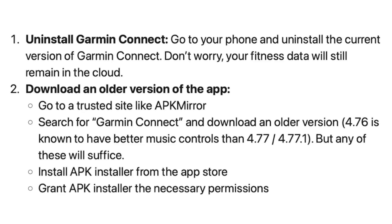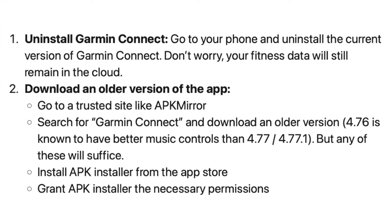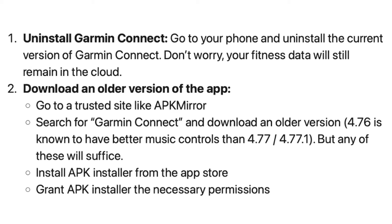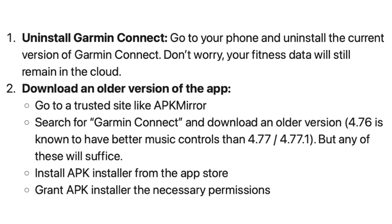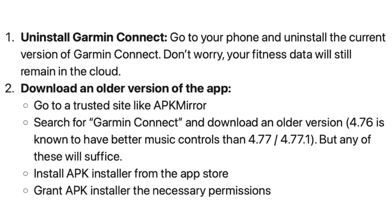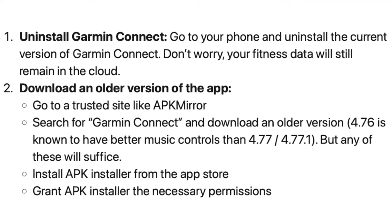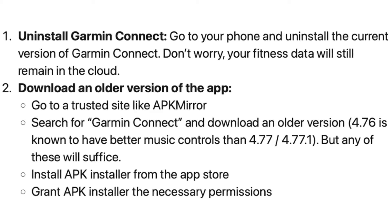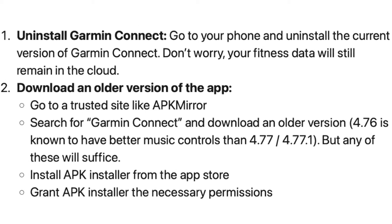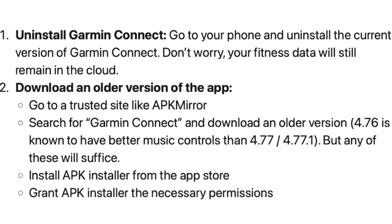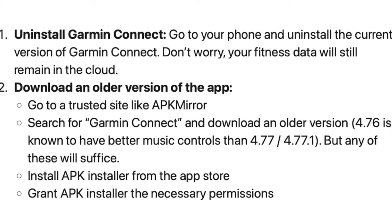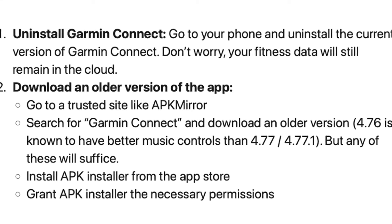First, you need to uninstall Garmin Connect from your phone. Don't worry, your fitness data will still remain in the cloud. Then you need to download an older version of the app. Go to a trusted site like APK Mirror — I'll post a link below.